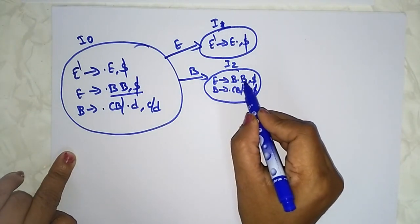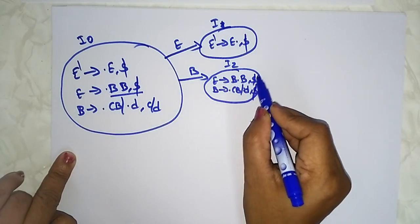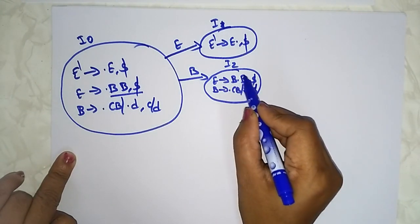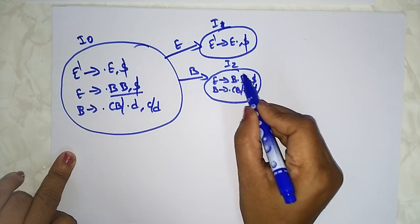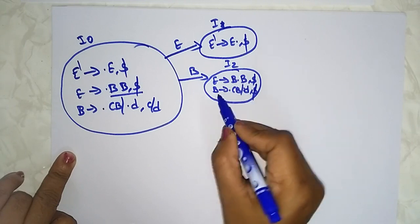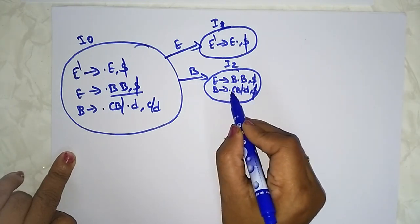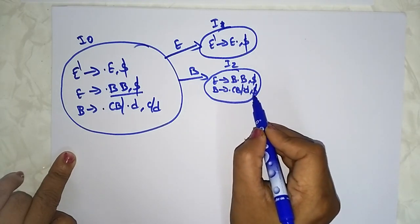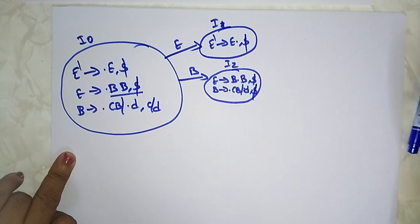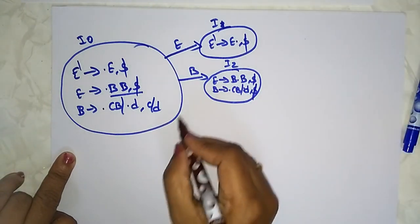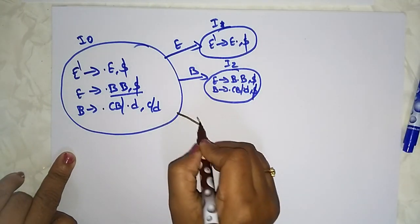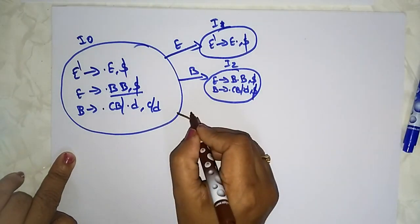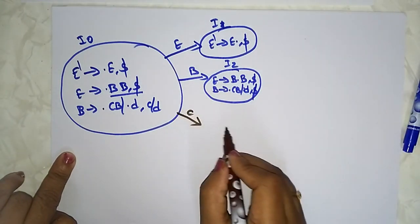For E → B · B with comma/dollar, we write only for this B: B → · CB and B → · D, with comma/dollar lookahead. Now let's take small 'c'.